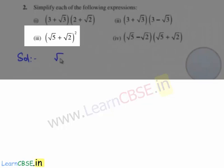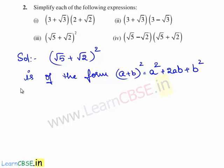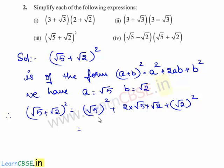Now let us move on to the third bit of the question. The third bit given is (root 5 plus root 2) whole square. This is of the form (a plus b) whole square, whose expansion is a squared plus 2ab plus b squared. On comparing, we have a equal to root 5 and b equal to root 2. Therefore (root 5 plus root 2) whole square equals (root 5) squared plus 2 times root 5 times root 2 plus (root 2) squared, which equals 5 plus 2 root 10 plus 2.